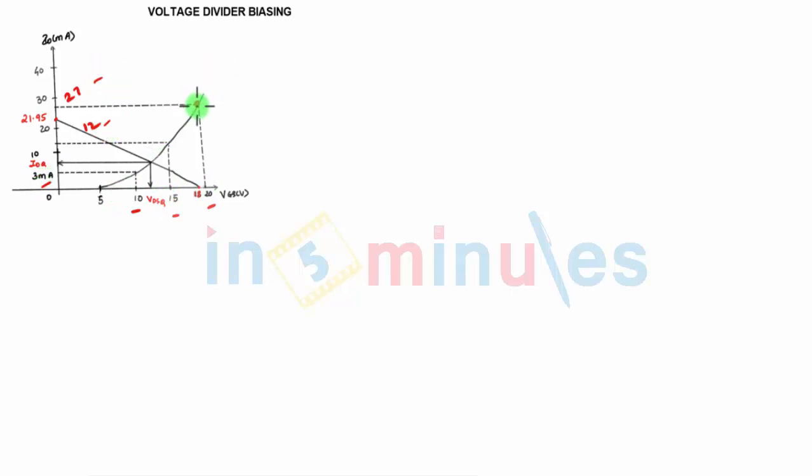When you join these three points with the threshold point, you will get the transfer characteristics. And for the load line, you have maximum 18 and 21.95. Wherever it cuts the transfer characteristics, that point is your Q point.